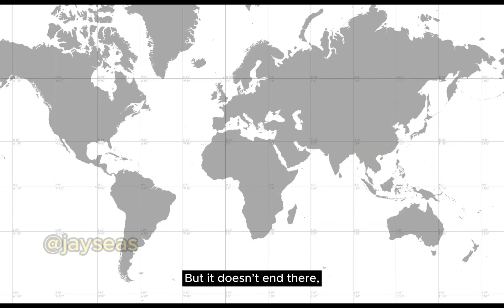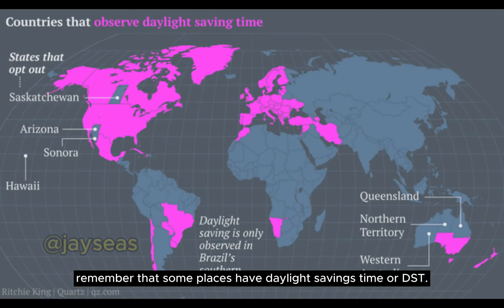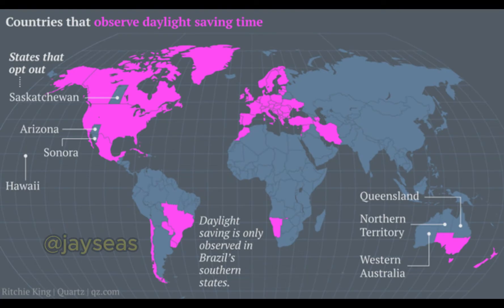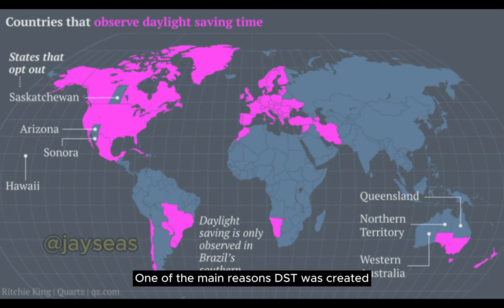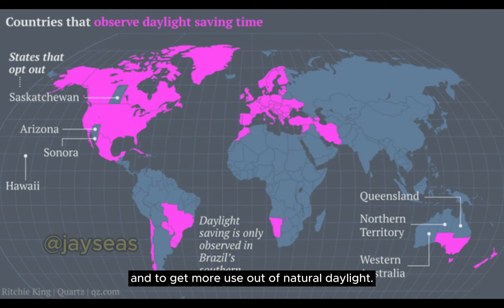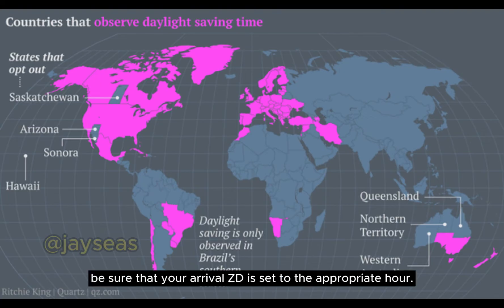It doesn't end there. Remember that some places have Daylight Savings Time or DST, where clocks are set forward at a certain month and back on a particular month. DST was created to save energy and to get more use of natural daylight. So before solving any ETAs, be sure your arrival city is set to the appropriate hour. Now let's proceed on what we're really here for.